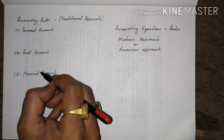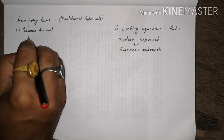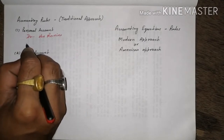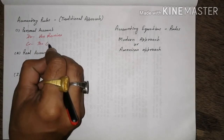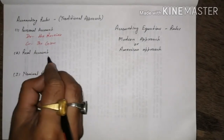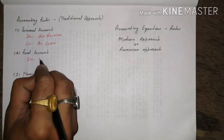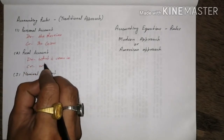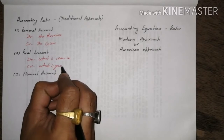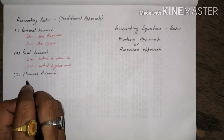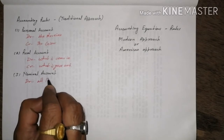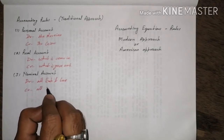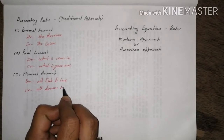There are 3 accounting rules: personal, real, and nominal. Personal account rule: debit the receiver and credit the giver. Real account rule: debit what is coming in and credit what goes out. Nominal account: debit all expenses and losses, credit all income and gain.